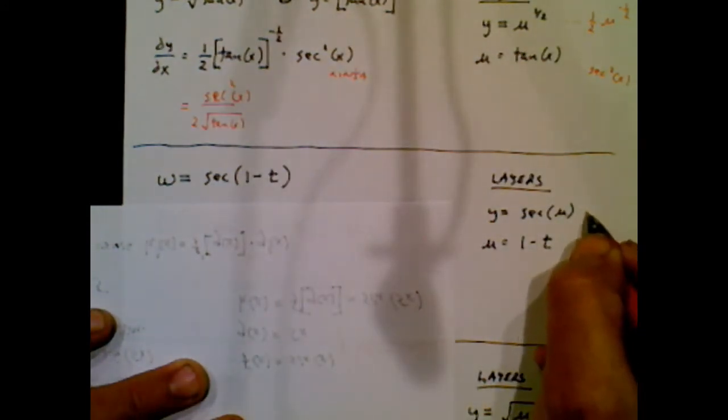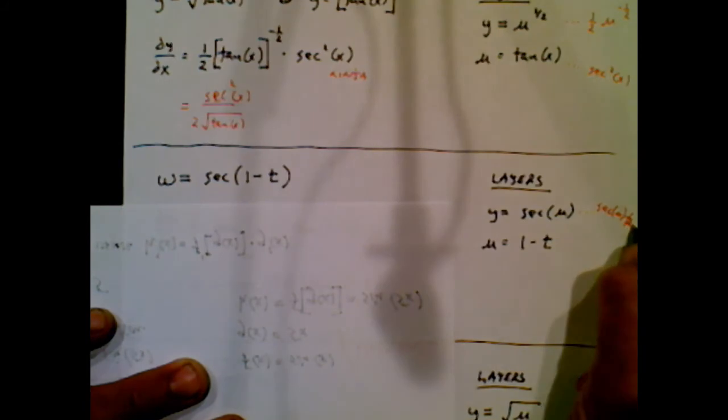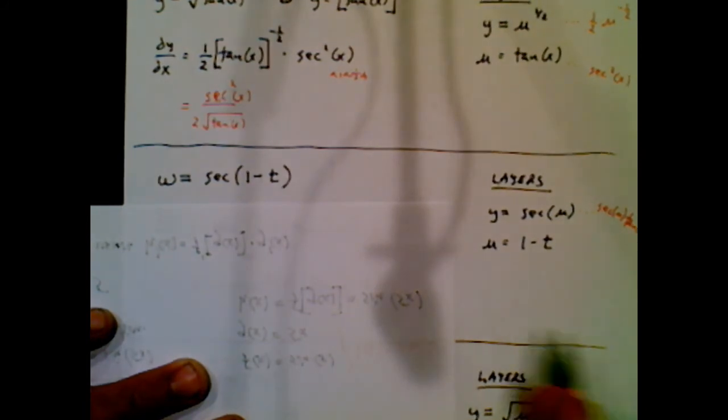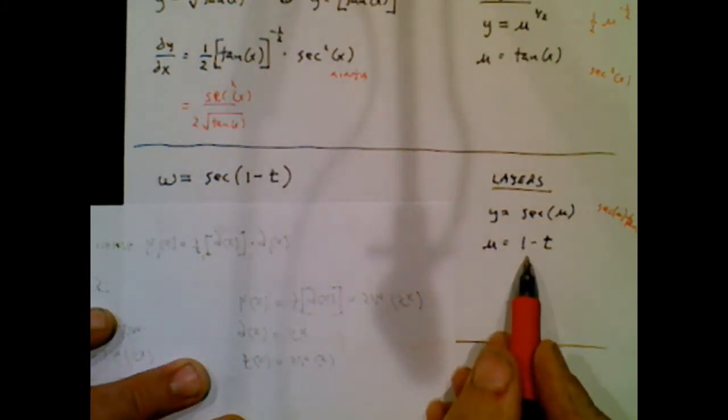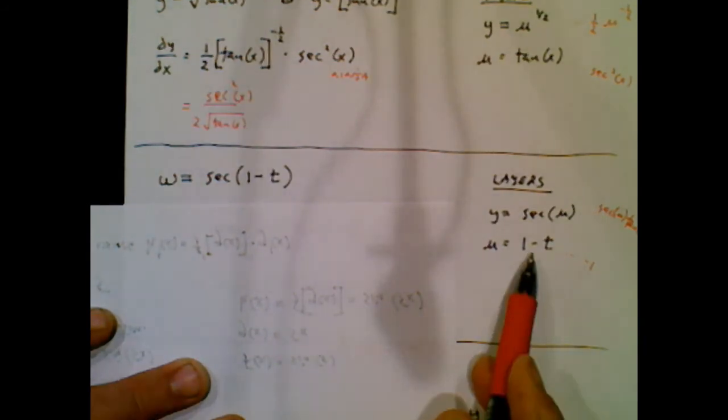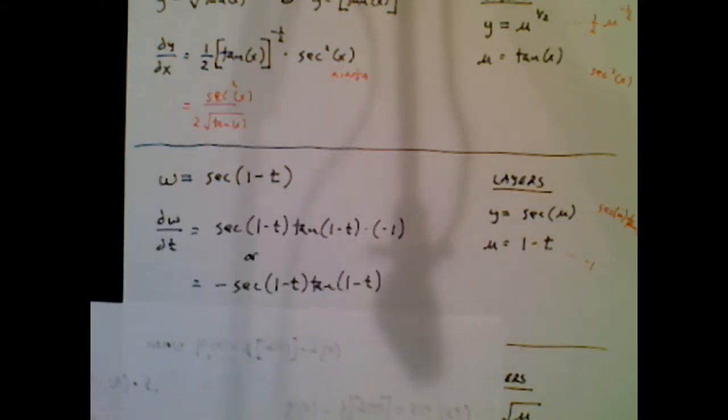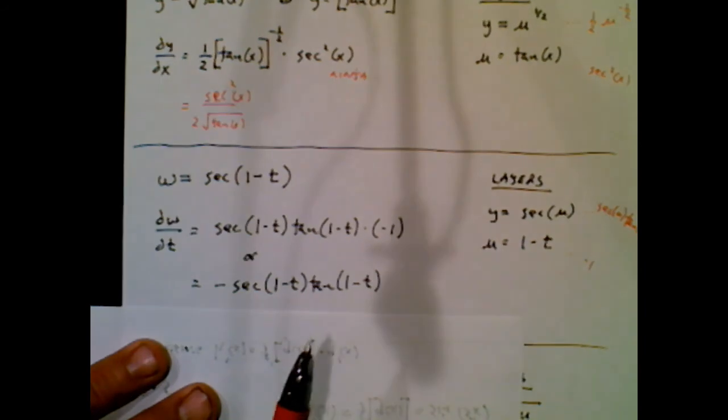So mentally, I would say, okay, secant has a derivative of secant tangent. And I would probably be tempted to say, well, this thing doesn't have a derivative, but it really does. The derivative is negative one. The derivative of one is a zero. The derivative of a t is one. So minus one.